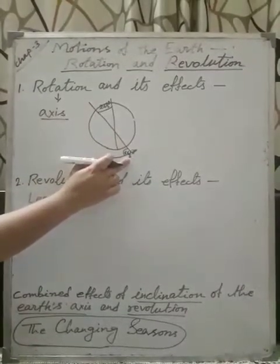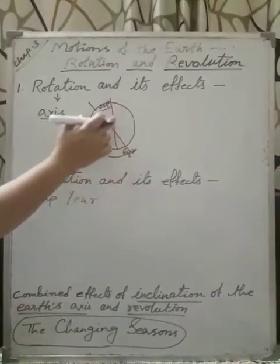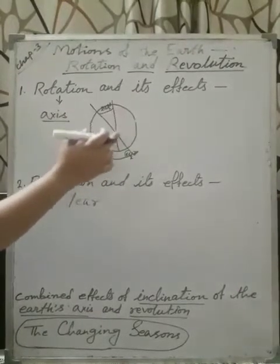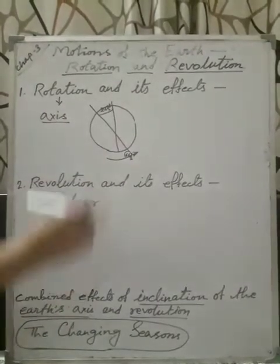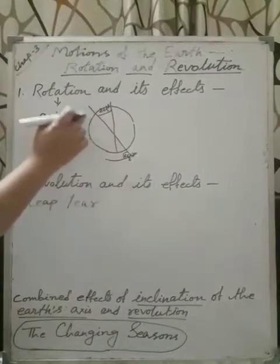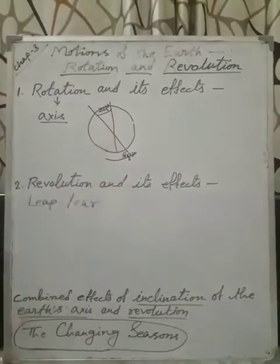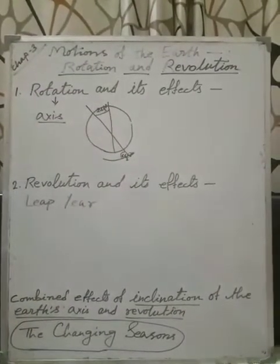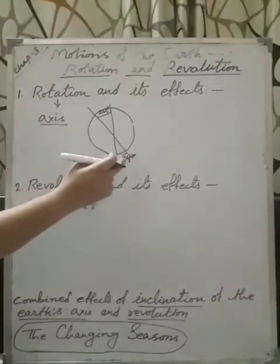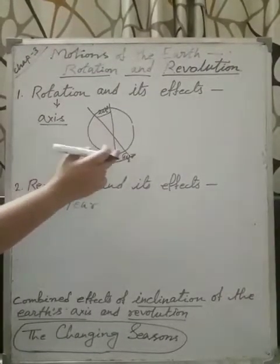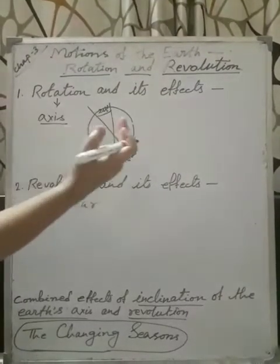These two angles are fixed. So, it is clear that axis is not a straight one. It is little bit tilted. And, forms these two angles. One with orbital plane. Another one perpendicular with a perpendicular line. This position of axis is called inclination of Earth's axis. But, this axis is very important. On the basis of this axis, Earth can rotate.